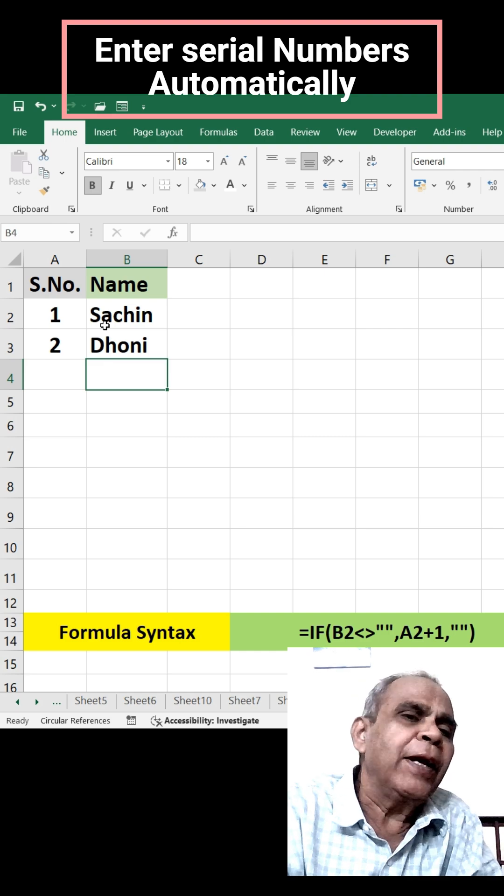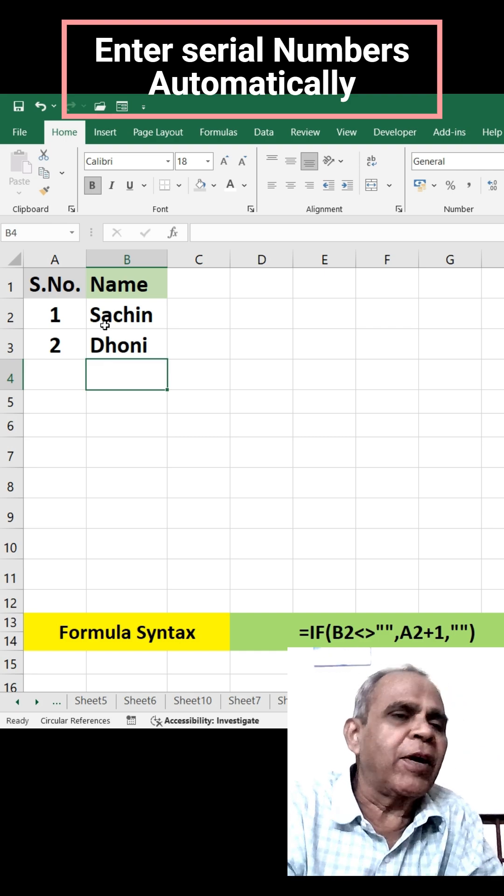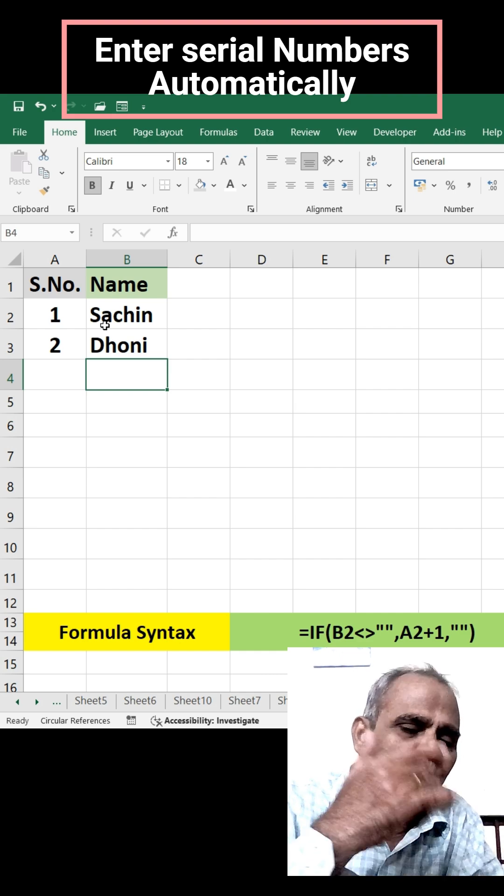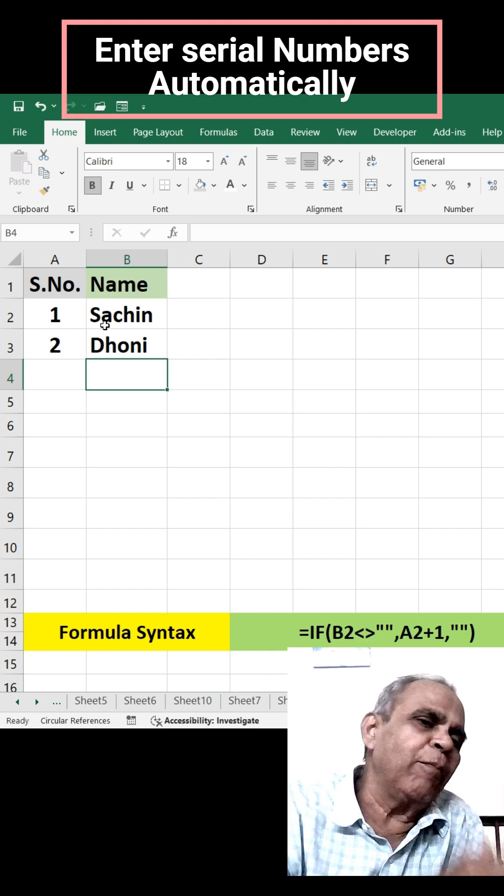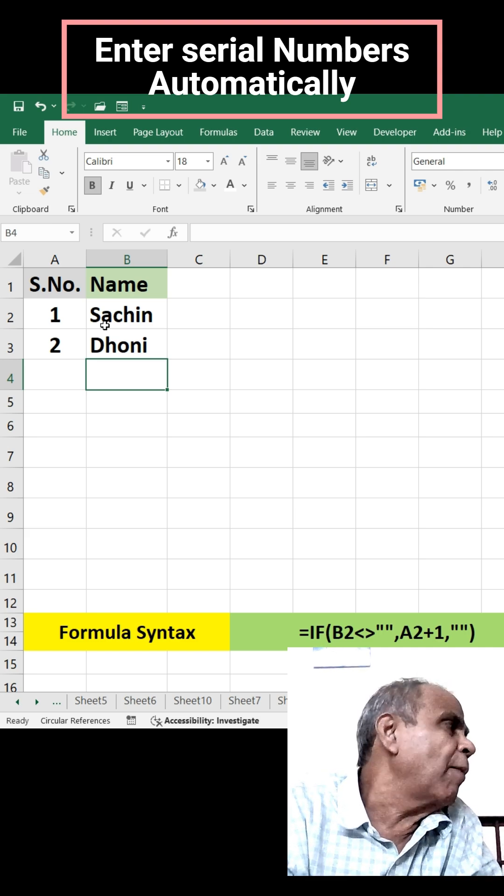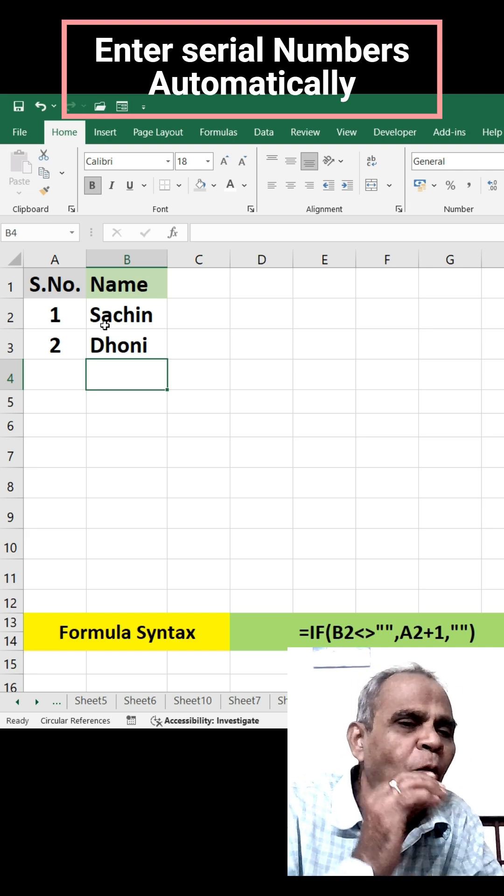Automatically, the serial number has come in A column. How did this happen? When entering names in B column, the corresponding serial number appears in A column. How did we get this?